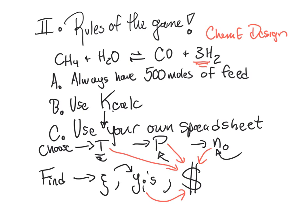How we deal with that in this design game is we run everything through the balancing force of money. As you change the temperature, it costs different amounts to run your reactor. As you change the pressure, same thing. You have to buy your feedstocks — some are pretty cheap, like water and air, and others cost more, such as really high-quality methane. And then you're going to be able to sell your products, but your products can be sold for more or less money depending on their purity and quality. I've captured that on the next slides, showing you how the sales price changes based on what your mole fractions are coming out.